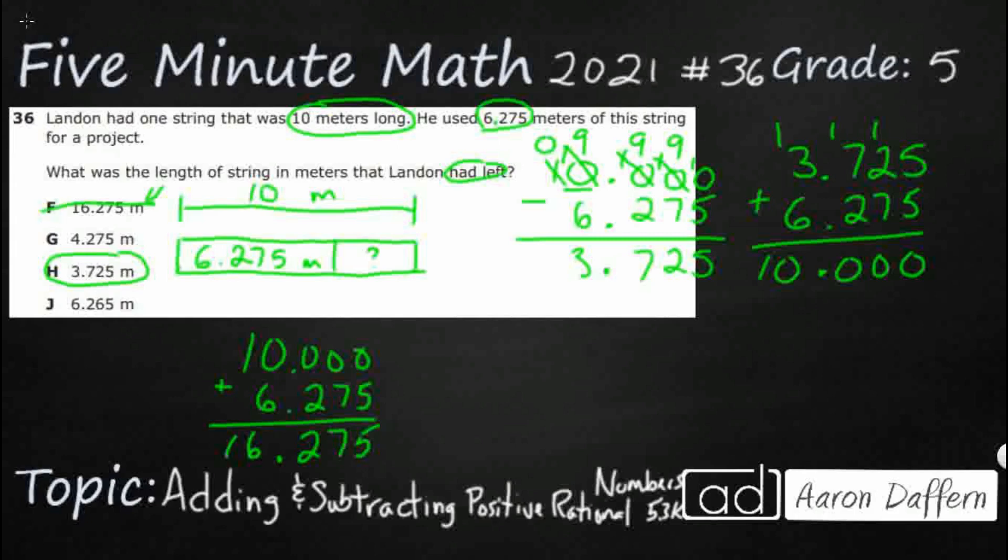Now, G is kind of sneaky. What if you know that you have to subtract and you don't know what to do with this 6.275? You line it up. You don't know about the zeros. So, you just kind of do like this. You just say, well, that's just 10 minus 275 and that's going to be 4.275. That's what G is, but that is incorrect. Our answer is H.